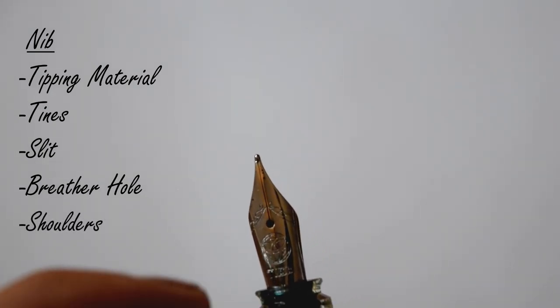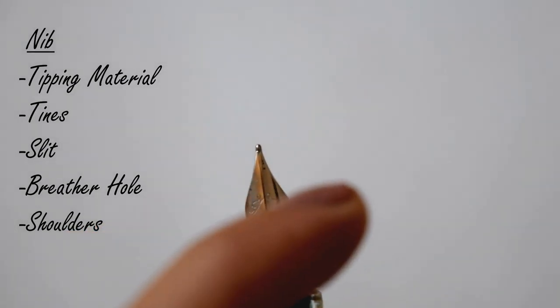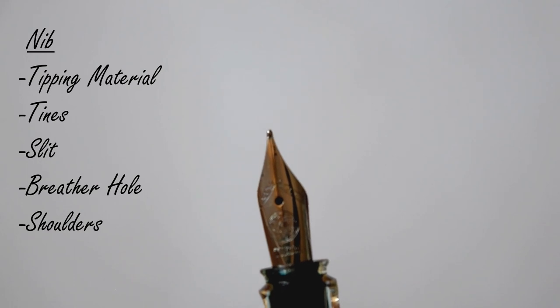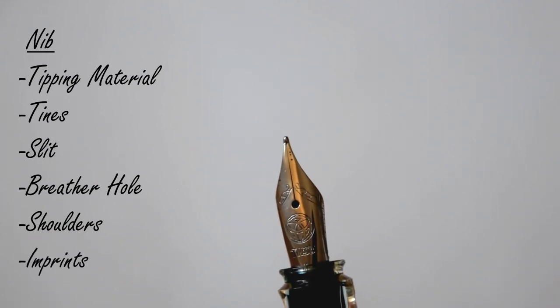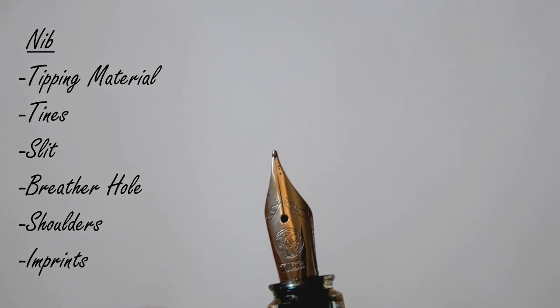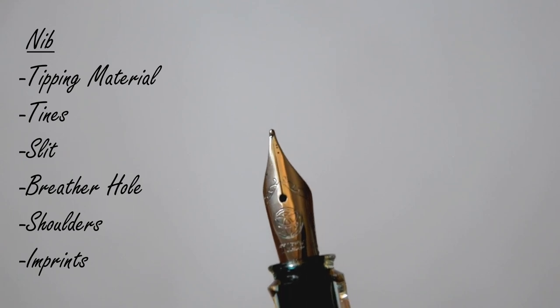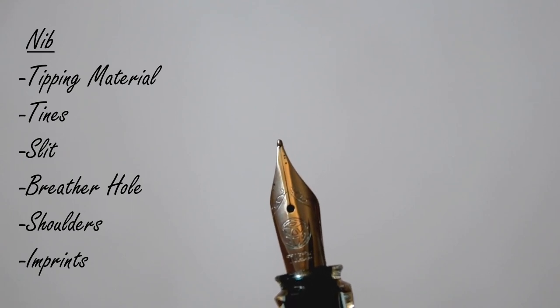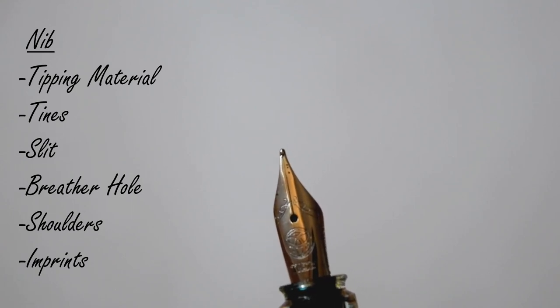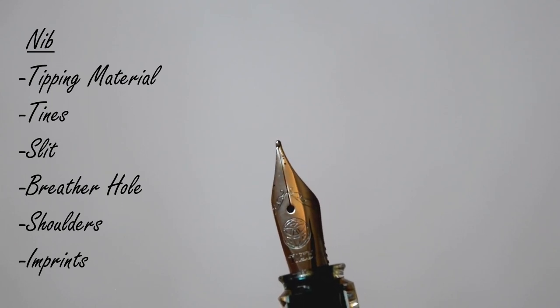Next we have the shoulders of the nib, which are basically the widest parts of the nib on either side. And finally, we have the imprints - the details that are engraved on the nib. These details are usually either about the nib size or even the brand, and imprints can also be laser etched and impressed onto the nib.